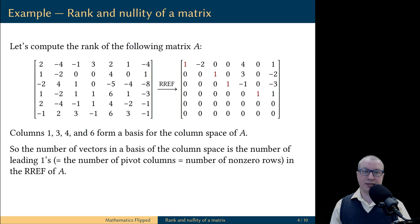which is the same as the number of leading ones, which is the same as the number of non-zero rows in the reduced row echelon form. But this argument shows that the dimension of the column space of A is equal to 4. Why? Because we have found a basis of size 4.